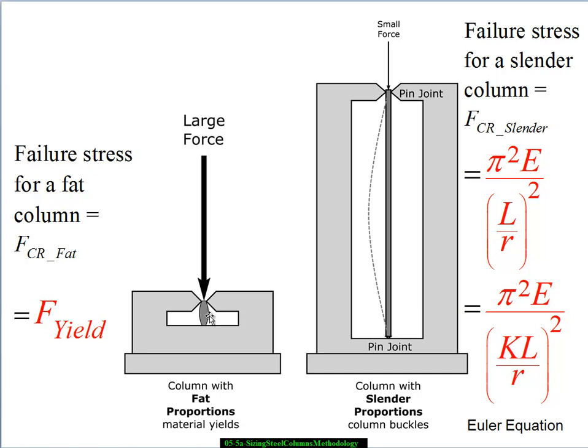Fat columns are really great. They're very sturdy, very stalwart. They give it their all and then when they fail, they fail by yielding. So the critical or failure stress for a fat column is F_yield for the material. It generally takes a very large force relatively speaking to fail a column with fat proportions.